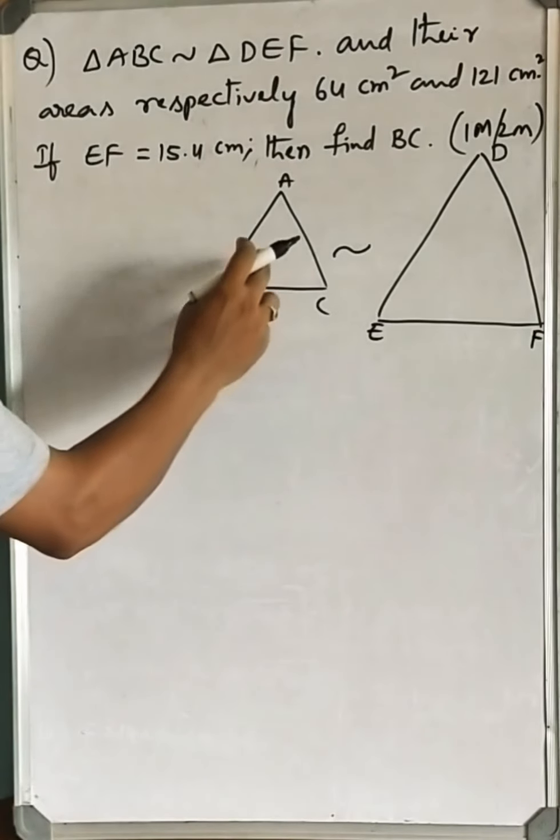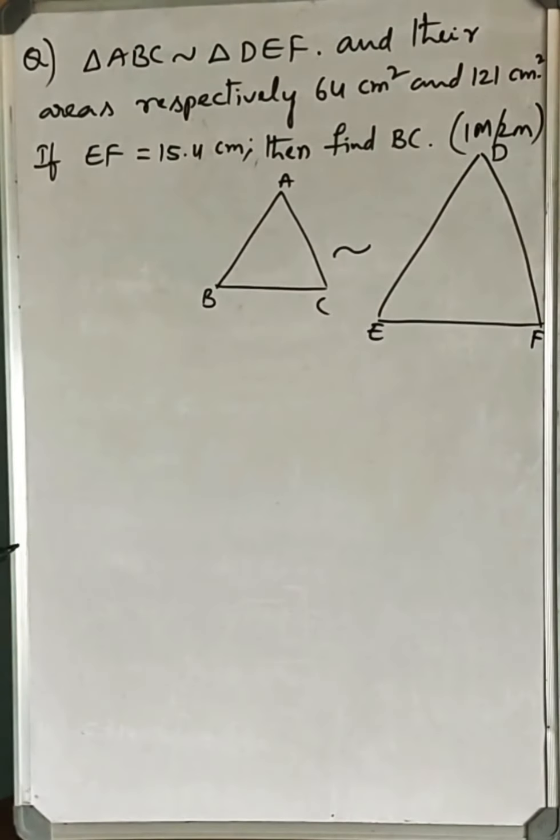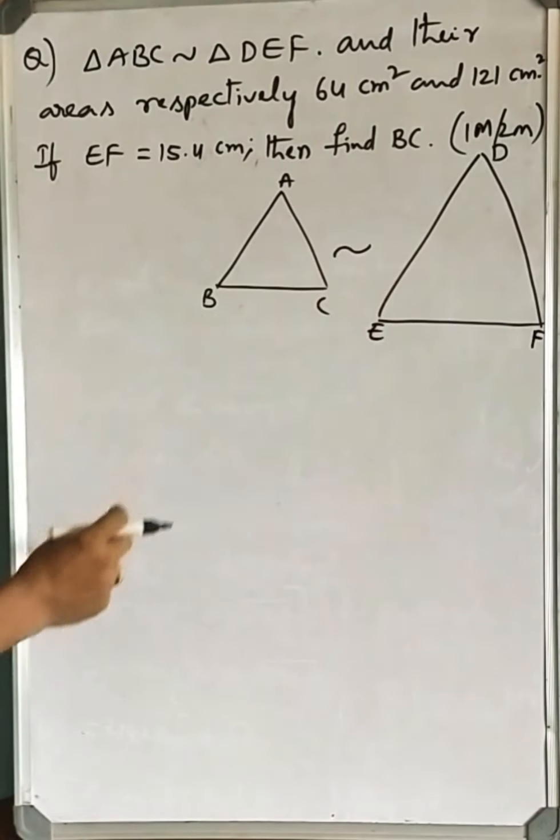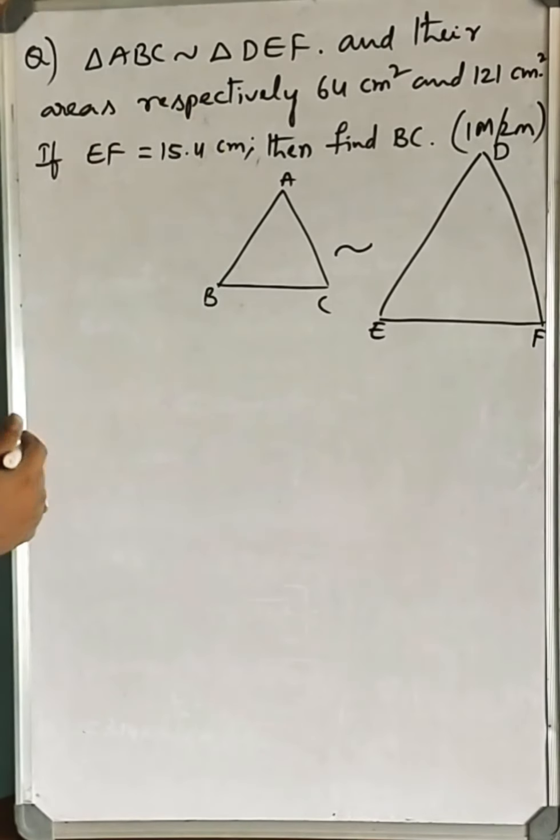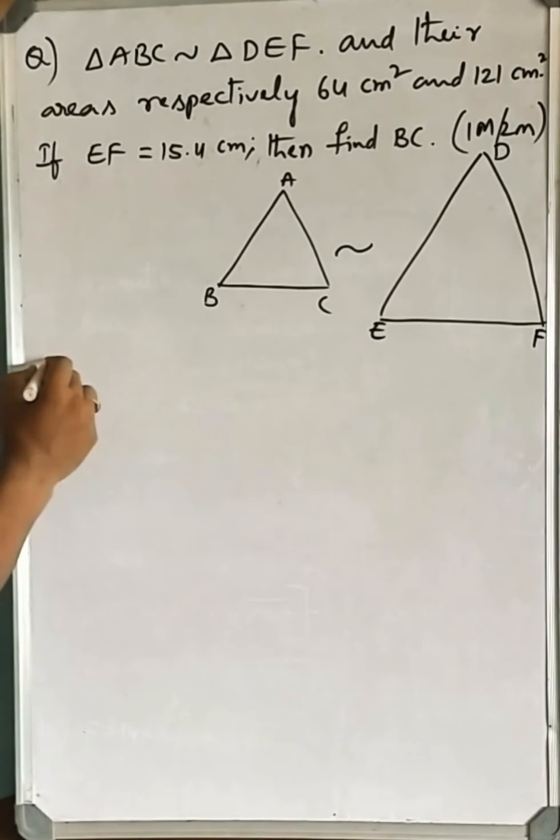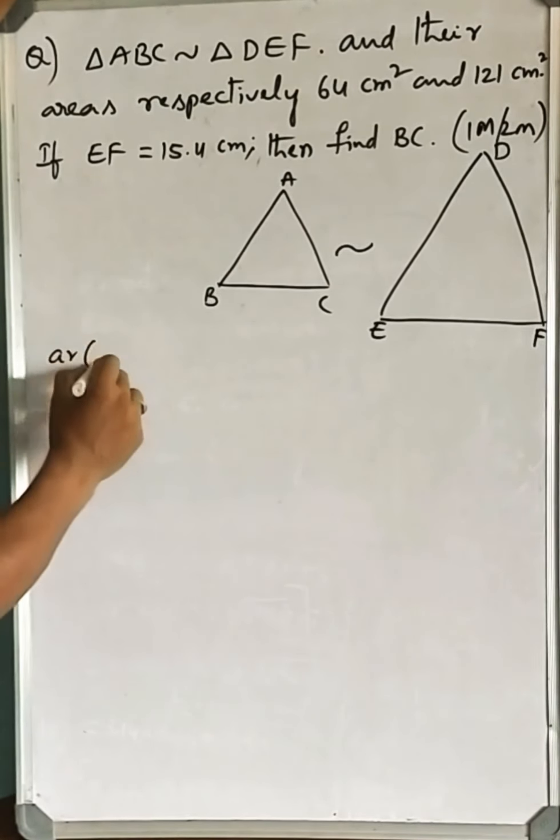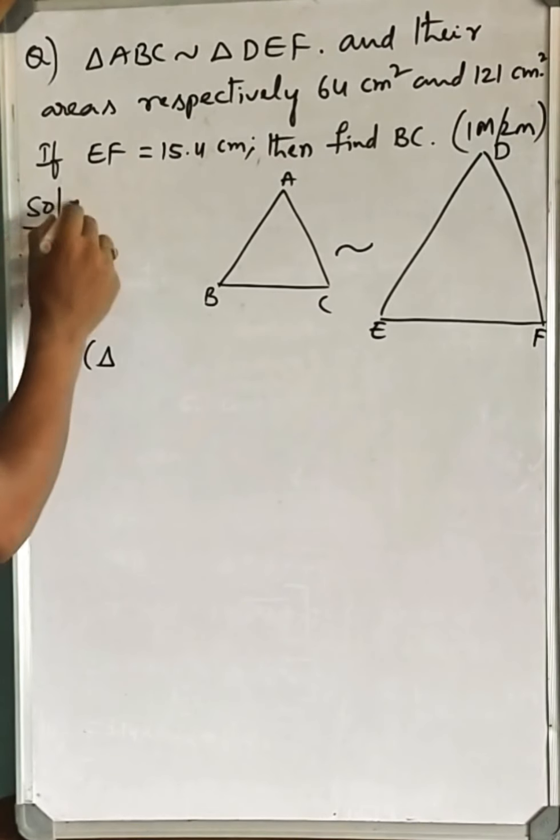As you know, if two triangles are similar, then the ratio of their areas is equal to the square of the ratio of corresponding sides. Let me write what is given first. This is the solution we are writing.